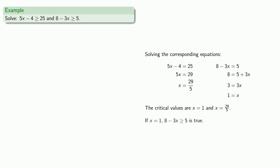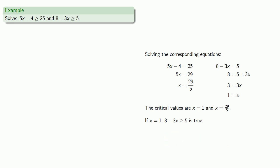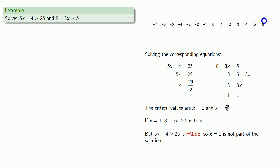If x equals 1, 8 minus 3x greater than or equal to 5 is true. But 5x minus 4 greater than or equal to 25 is false. So x equals 1 is not part of the solution. We'll graph our solution: x equals 1 is a critical value but it's excluded, so we'll put an open circle at x equals 1.